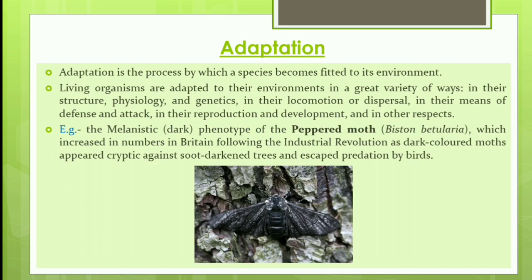Next is adaptation. In simple language, adaptation is the process by which a species becomes fitted to its environment. Living organisms are adapted to their environments in a great variety of ways — in their structure, physiology, genetics, locomotion, means of defense or attack, and reproduction. A clear example is the melanistic phenotype of the peppered moth, which increased following the Industrial Revolution as dark-colored moths appeared cryptic against soot-darkened trees, escaping predation by birds.